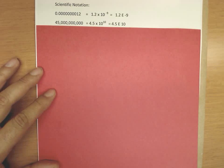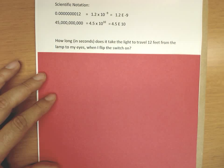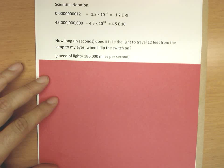Now let's look at a kind of problem where scientific notation will come up. How long in seconds does it take the light to travel 12 feet from the lamp to my eyes when I flip the switch on? And the speed of light is 186,000 miles per second.